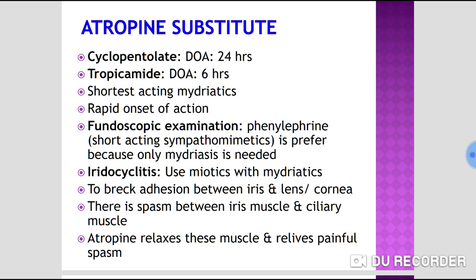In iridocyclitis or iritis, miotics and mydriatics are used alternately to break adhesions between the iris and lens, and between the iris and cornea. Atropine relaxes the ciliary muscle and relieves the painful spasm.